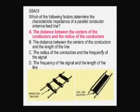What determines the characteristic impedance is the distance between the centers of the conductors and the radius of the conductors. If you know those things, there actually is a formula you can use to calculate what the characteristic impedance of that feed line will be. The distance between the centers and the radius of the conductors.